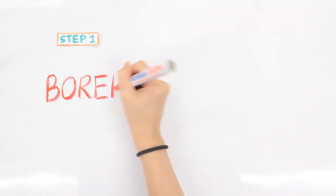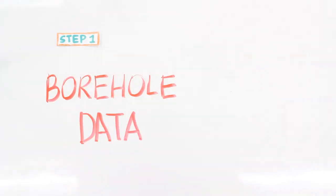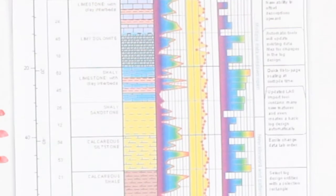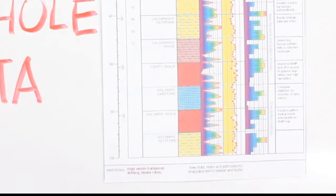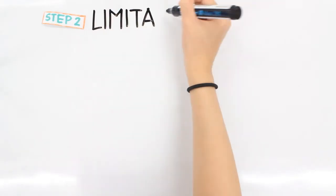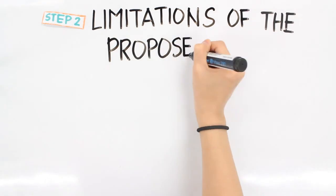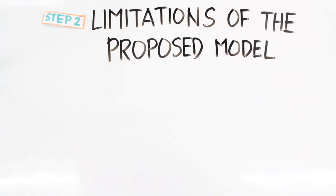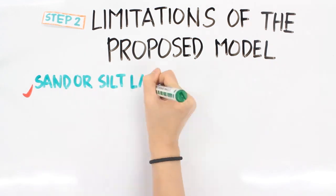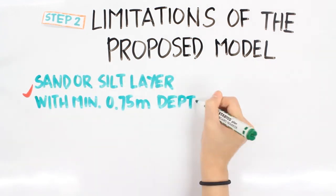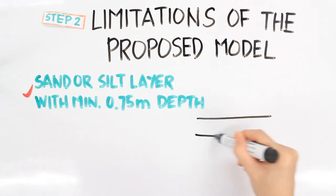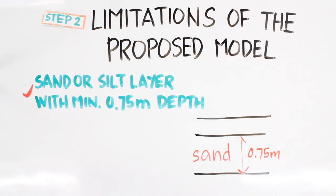Now, we can apply the results through the following steps. First, obtain a borehole data of the pile driving site you are considering. Using the borehole data, check with the limitations of the proposed model to verify if the model is applicable for the particular site. The predominantly sand and silt layers in the site should have a minimum individual layer thickness of at least 0.75 meters.